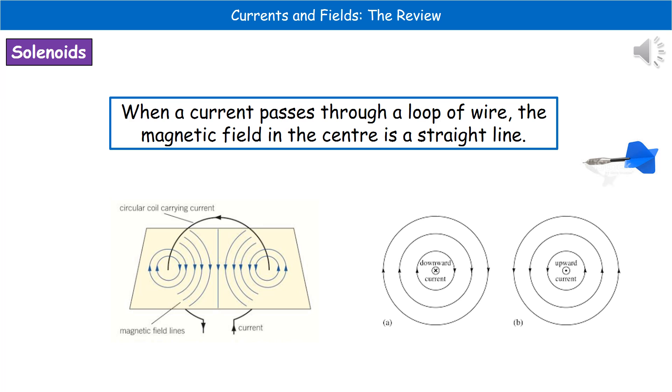When we're looking at this on an exam paper, they may draw it as just a symbol representation of the direction of the current. The way you work out what direction the current is going in is by looking in the middle. If you look at the diagram on the right hand side, you can see the downward current has a cross in the centre and the upward current is a dot.